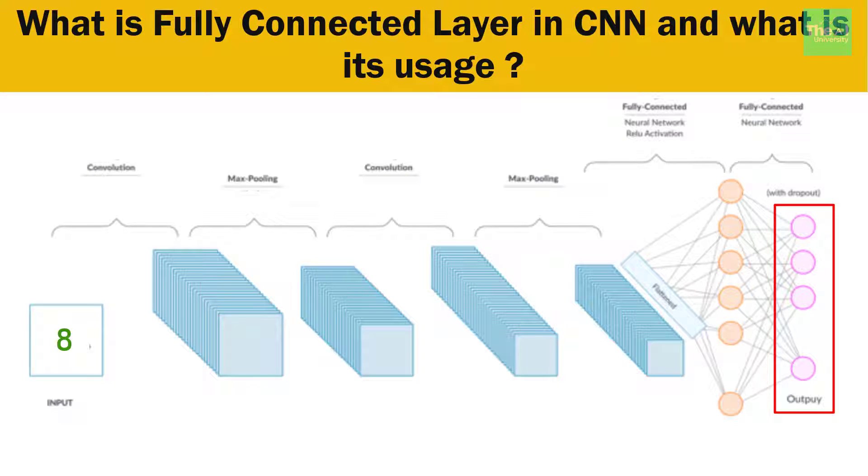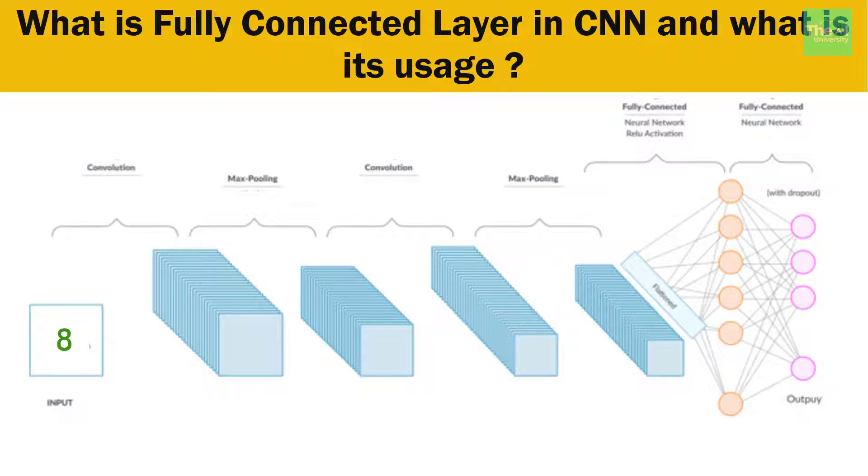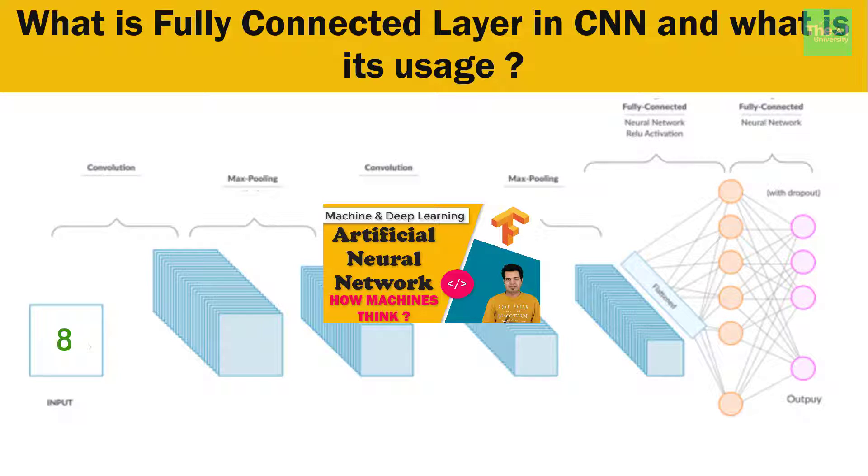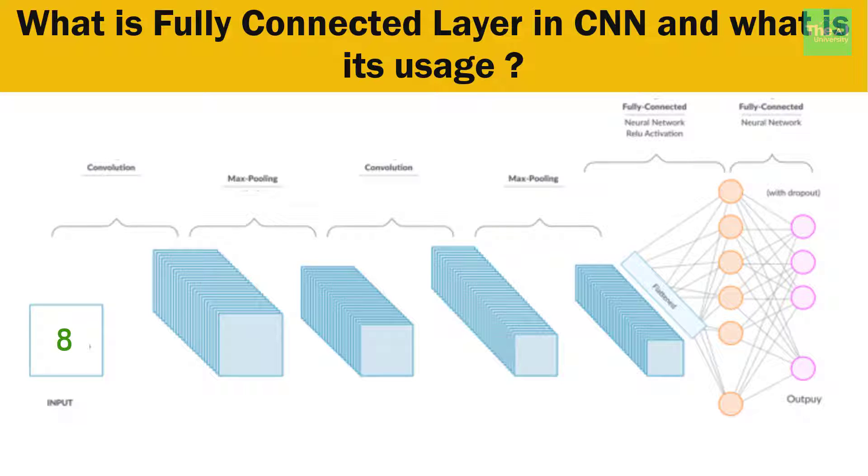So we pass the whole feature vector which we got as a part of flattening operation to this input layer of ANN and then to the fully connected layer. This fully connected layer then combines the features into more attributes that better predict the classes such as parrot and man. If you want to know more in detail about ANNs, you can watch this video. Link is given in the i button above. Let me show you an image to discuss some more details.